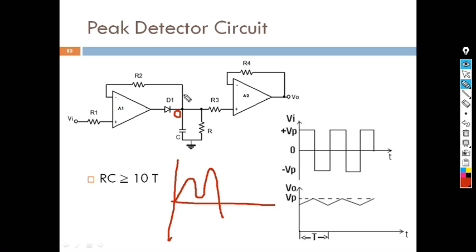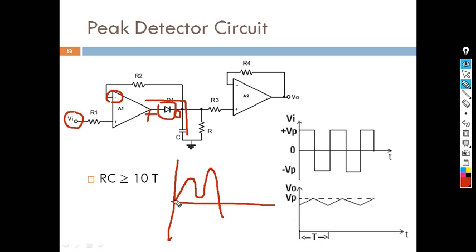We are feeding zero voltage to the inverting terminal of the operational amplifier. But the input is generally greater than this, so the output of the operational amplifier becomes positive, which forward biases the diode. When the diode is forward biased, a path is established for current flow and that charges the capacitor. Charging of the capacitor continues until it reaches the peak.